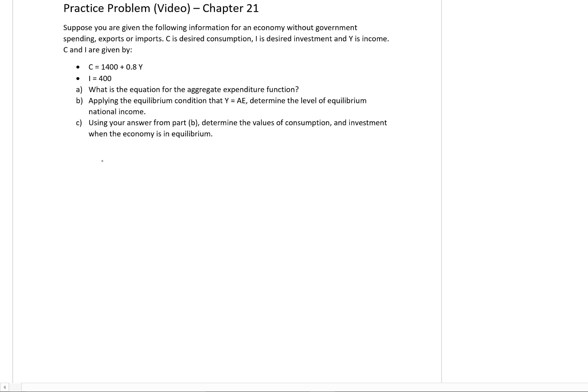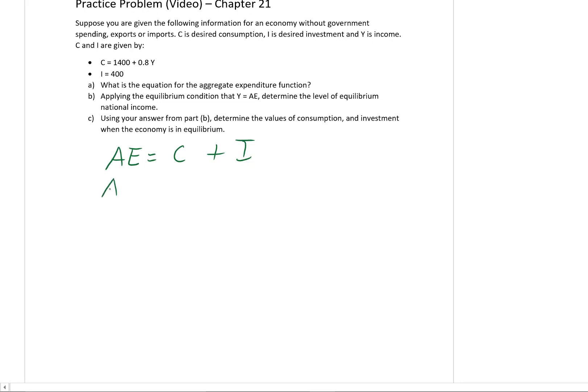We know that AE equals C plus I. Because there's no government, there's no government spending, there's no exports and no imports, we're left with desired aggregate expenditure equals consumption plus investment. Now we have to plug in what our functional forms are equal to, and we're given what functional forms for C and I here. So 1400 plus 0.8Y plus 400.